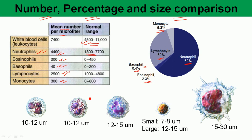In terms of size, the neutrophil is 10 to 12 micrometers in diameter, the eosinophil is also 10 to 12 micrometers, and the basophil is slightly larger at 12 to 15 micrometers in diameter.